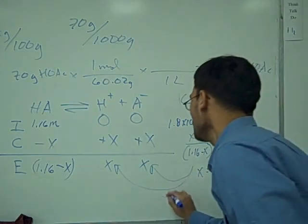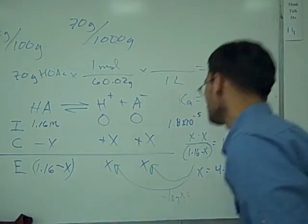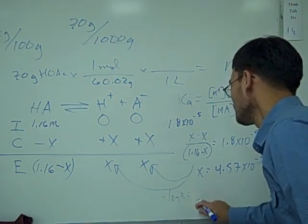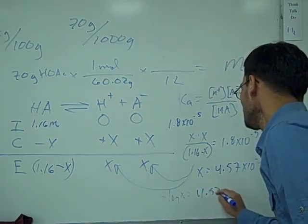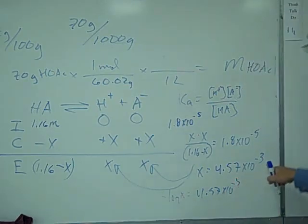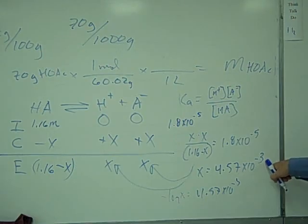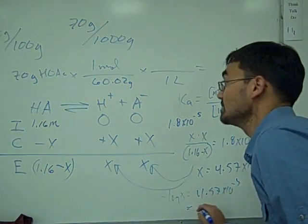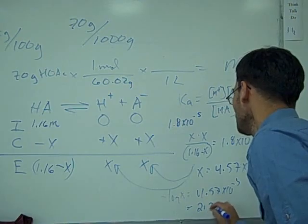If we take the negative log of that, that gives us our actual hydrogen ion concentration in terms of pH. The negative log of 4.57 times 10 to the negative 3, you know it's going to be less than 3. If you take negative log of that and subtract that less than one value from it, you'll end up with a number greater than 2 but less than 3 as a pH value. A calculation of that will show you that it is 2.340.